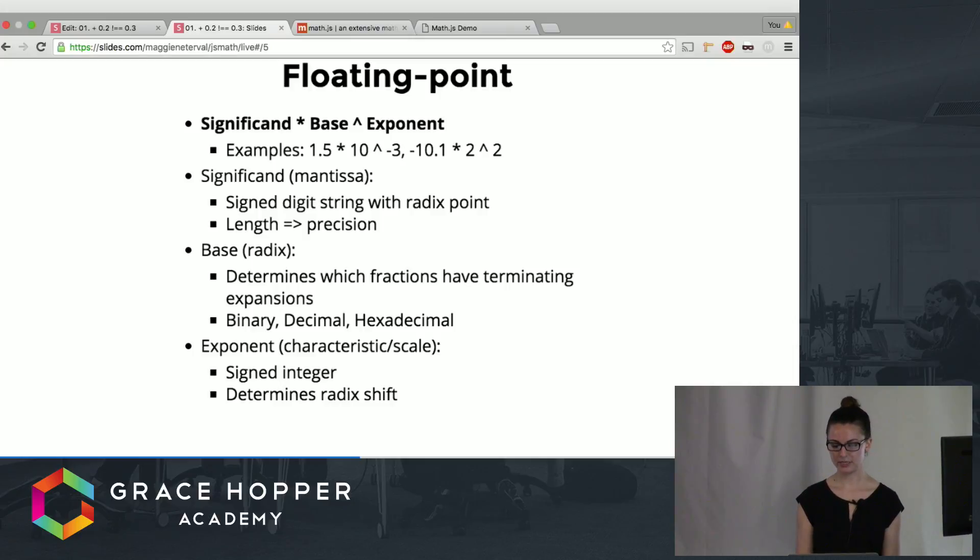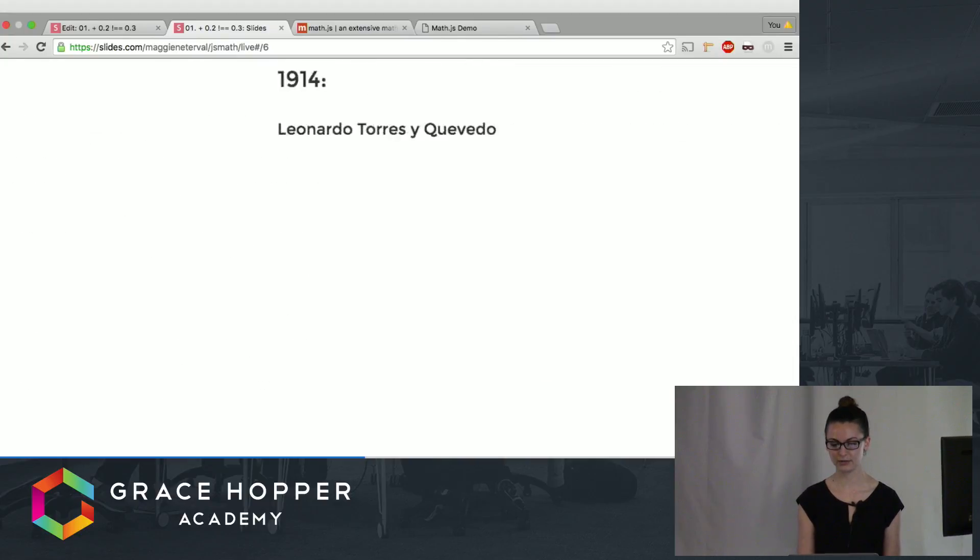The exponent can also be positive or negative and this will determine how much the radix point has to shift so that it can be represented with the radix point after the first non-zero number.